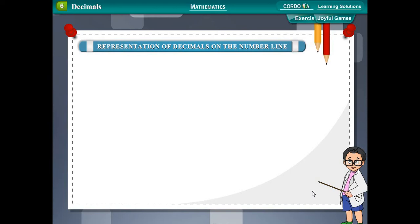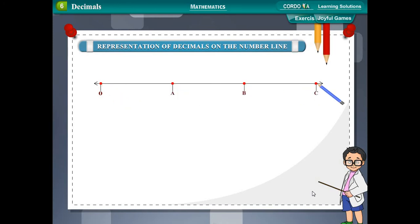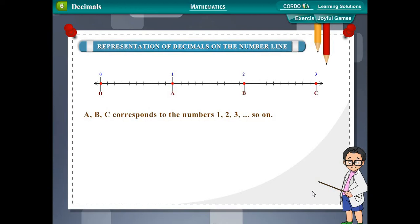Representation of decimals on the number line. We draw a line and mark a point O on it. We then mark points A, B, and C at equal distances to the right of O, letting O represent 0. The distances from O to A, A to B, and B to C are each divided into 10 equal parts. So A, B, C correspond to 1, 2, and 3 respectively. OA = 1 unit, OB = OA + AB = 2 units, and OC = OB + BC = 3 units.